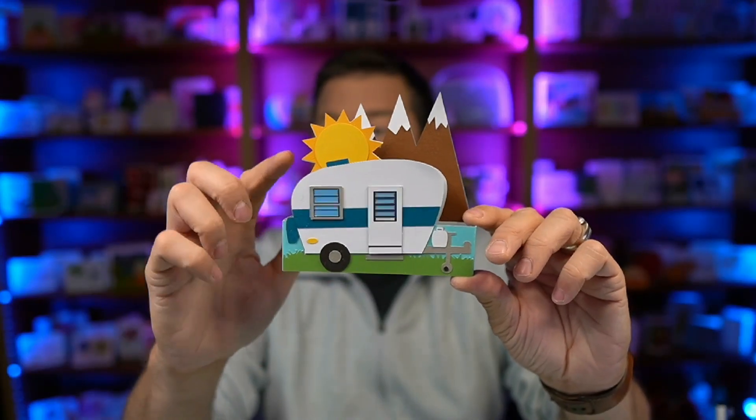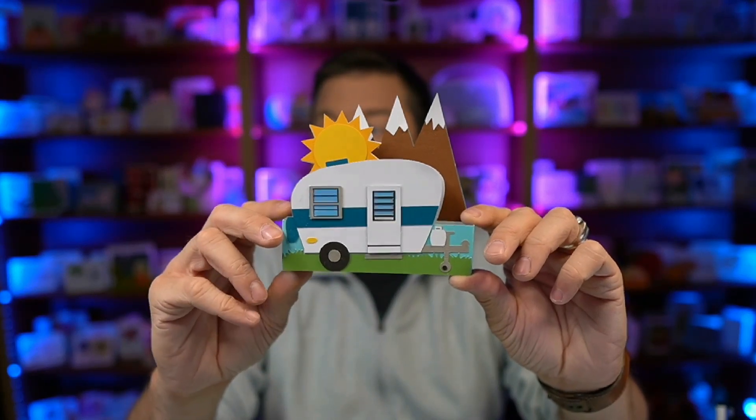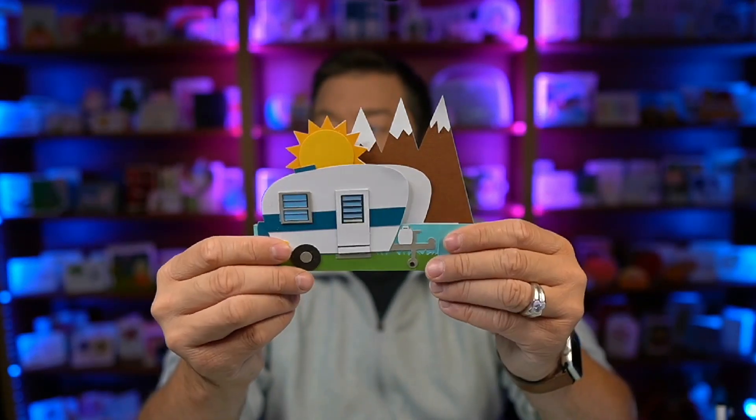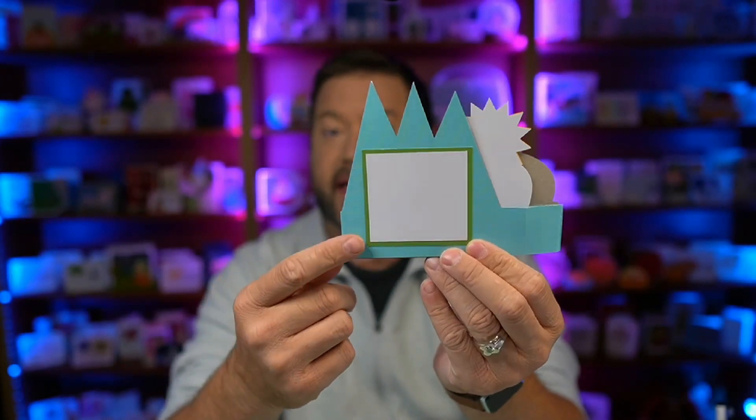It has the inside piece, which gives the sun a little bit of dimension. It folds nice and flat, and then on the back is a spot for your message. I also include an envelope with this file. It's super simple to put together and I can't wait to show it to you.